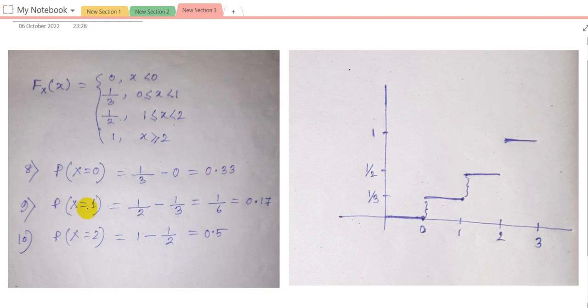In question 9, we have to find P(X = 1). It is the jump from 1 to 2. Here is the jump and the value is half minus 1 by 3 which is 1 by 6 equal to 0.17.